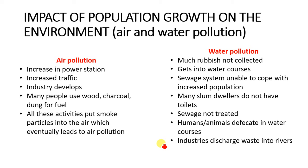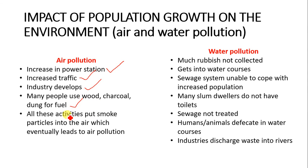I saw this in a past exam paper, so I want to add it: what is the impact of population growth on the environment in terms of air and water pollution? If there is an increase in population, there must be an increase in power stations to provide electricity. This can also lead to increased traffic, and more industries will develop to meet the needs of the growing population. More people also use wood, coal, and dung for fuel. All these activities put smoke particles and gas particles like carbon dioxide into the air, which eventually leads to air pollution.